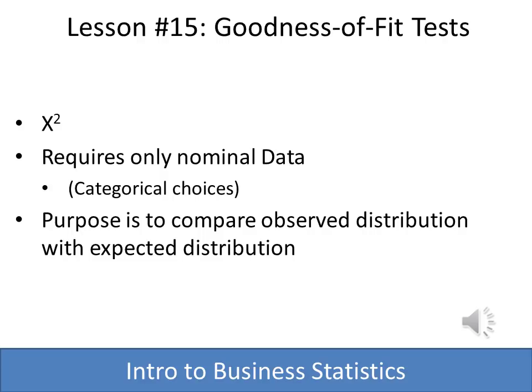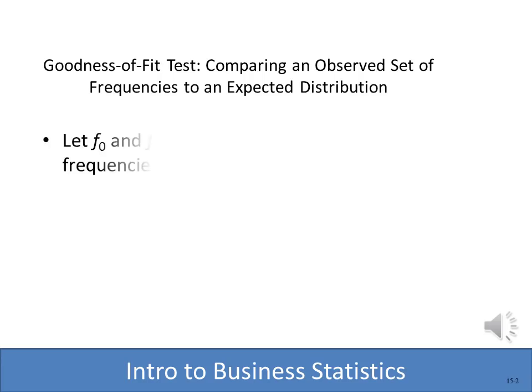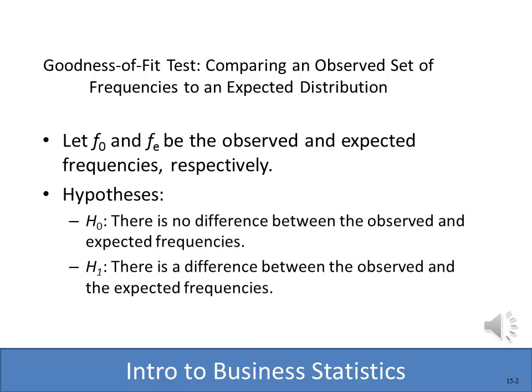We use chi-square for categorical choices, and the purpose is to compare the amount in each category that we observe with what we expected to observe. For example, maybe we thought there was no preference between Coke and Pepsi, and if we observed a difference we wanted to see whether or not it is statistically significant. The null hypothesis is that there's no difference between the observed and expected frequencies; the alternate is that there is a difference.